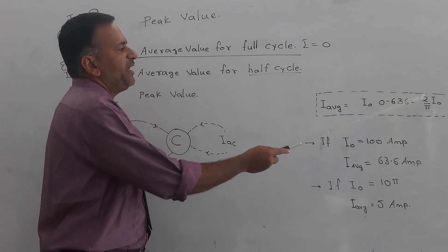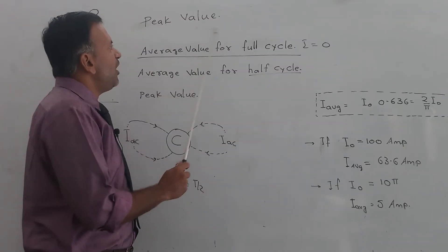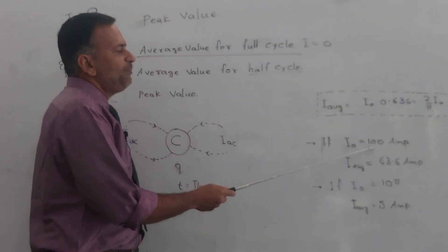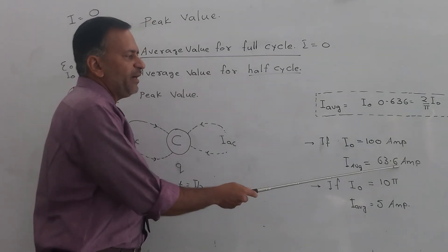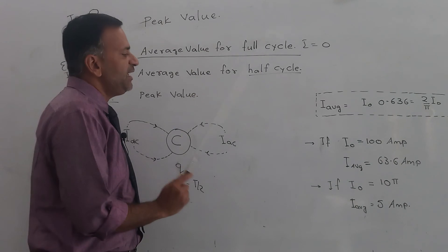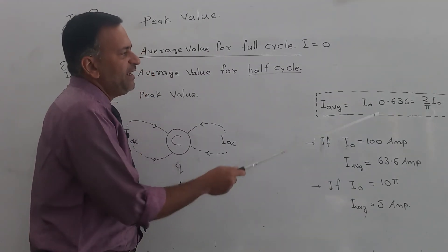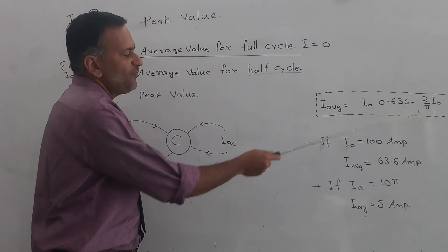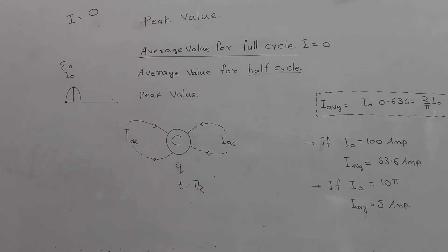That means if the peak value of an AC is 100 ampere, then its average value will be 63.6 ampere. If the peak value of AC is 10π, then the average value of that AC will be 5 ampere.